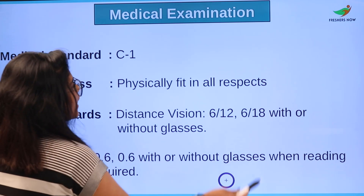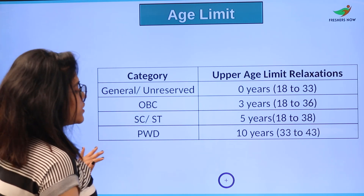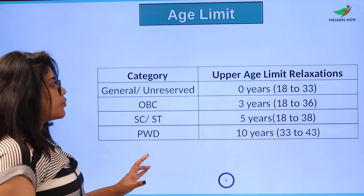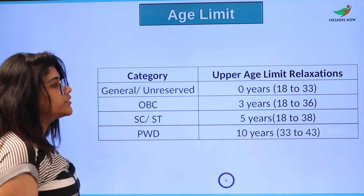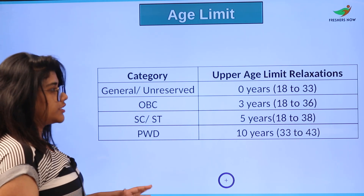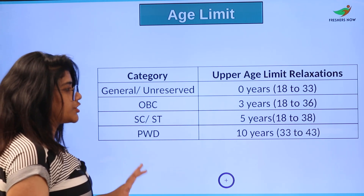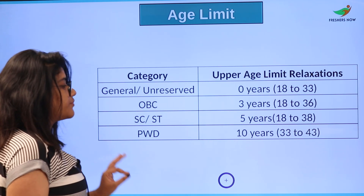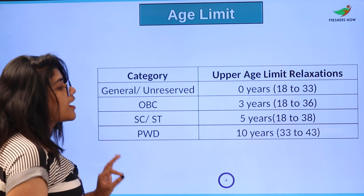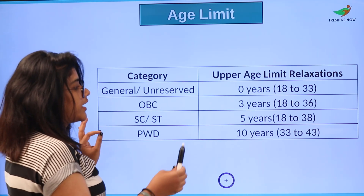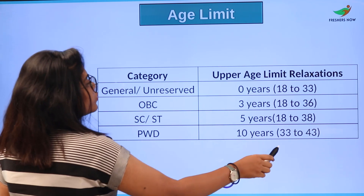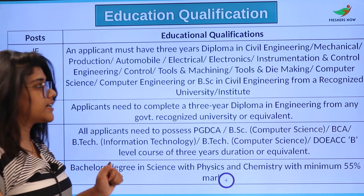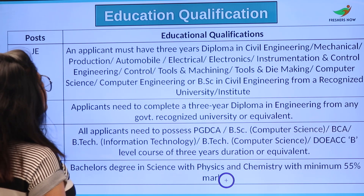Now let us see what the age limit is for this particular post. For General and Reserved category, it is 18 to 33 years. For OBC, it is 18 to 36 years. For SC/ST, it is 18 to 38 years. And for PWD category candidates, the age limit is between 33 to 43 years.